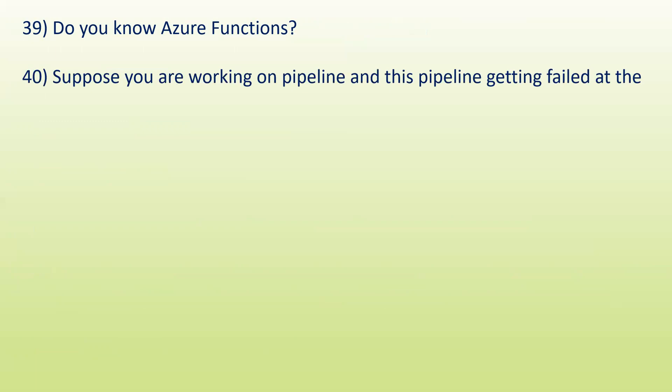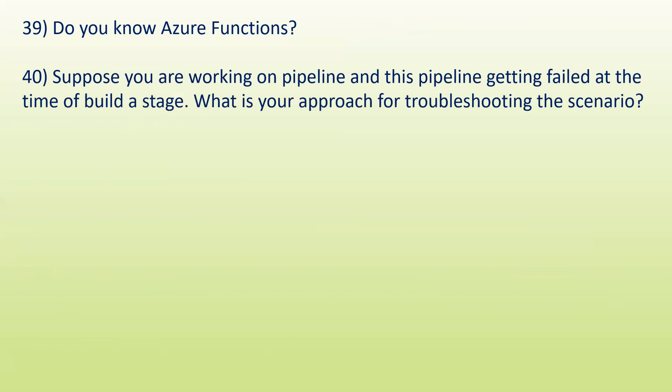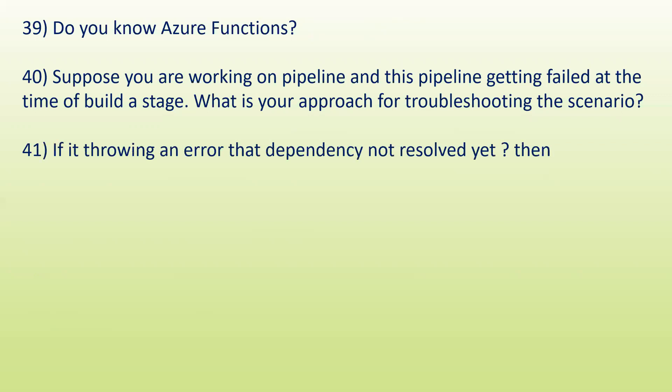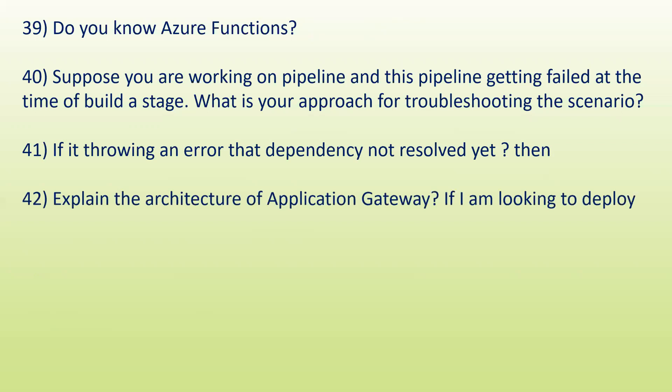Next question: suppose you are working on a pipeline and this pipeline is getting failed at the build stage — what is your approach for troubleshooting this scenario? This is related to a CI/CD pipeline and you have to tell them your troubleshooting approach. If it's throwing an error that a dependency is not resolved, that is a related question. Without practice you can't get this kind of error, so you have to solve it through practicing.